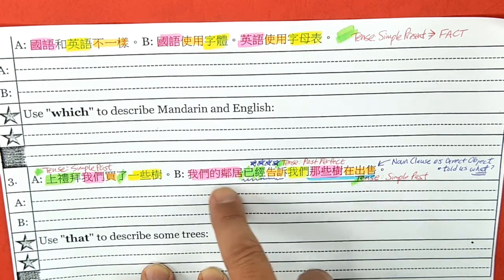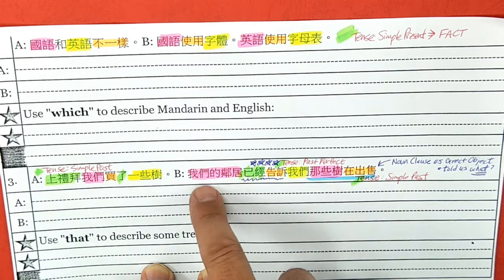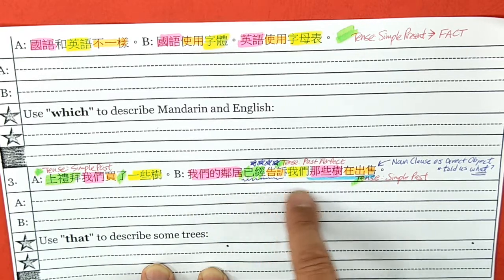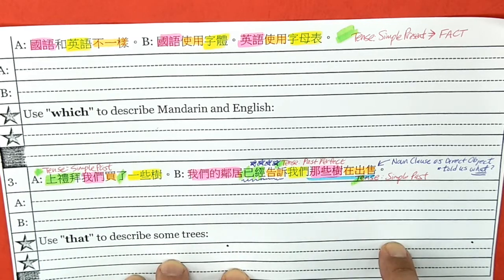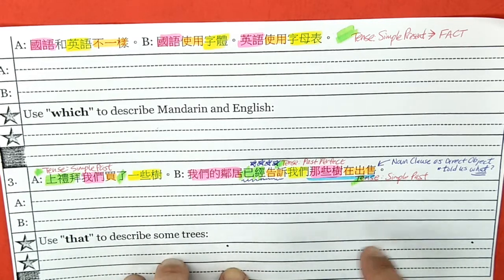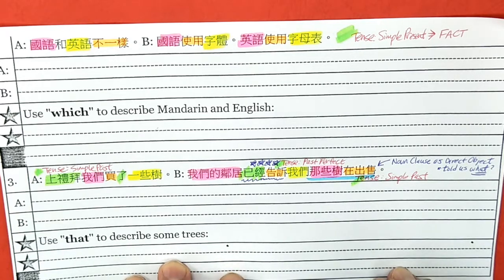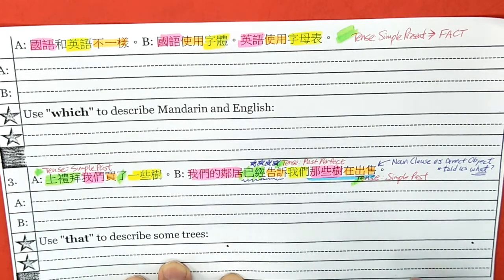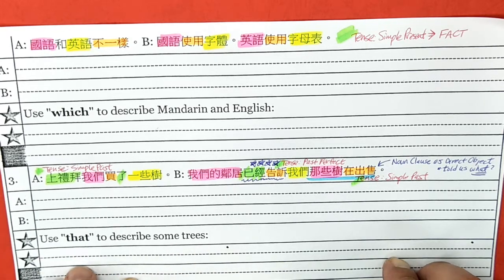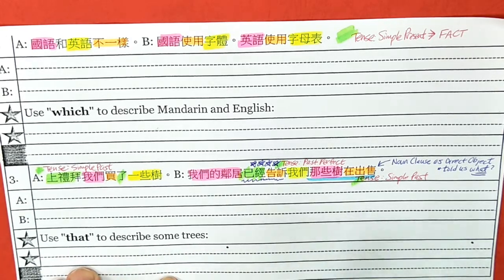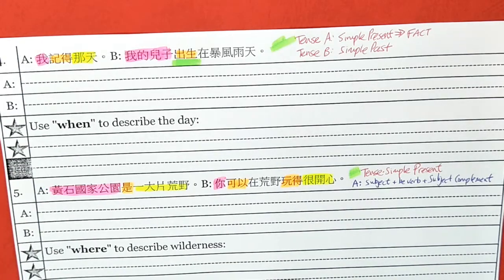Another thing about this sentence is there are two actions here — two verbs. Because there are two verbs and they both happened in the past, we need to know which one happened first. The first action, we use past perfect. That will tell your reader that this action happened first. Let's look at number four.